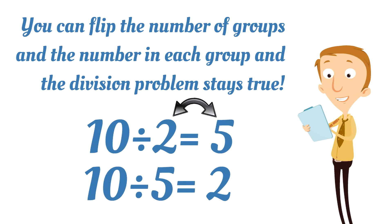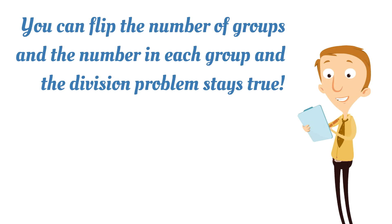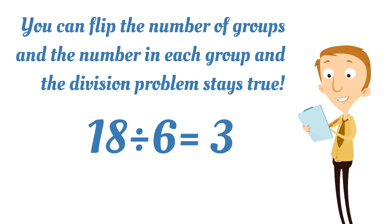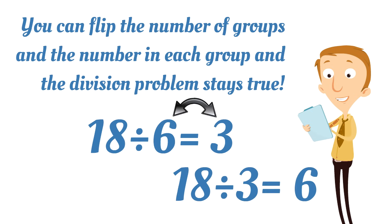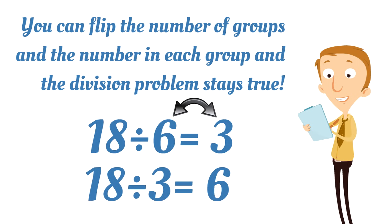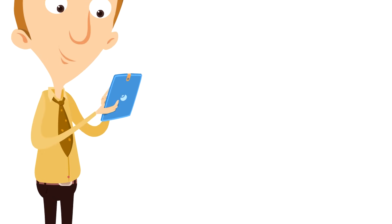10 divided by 2 equals 5, and 10 divided by 5 equals 2 — you can flip the number of groups and the number in each group and it still stays true. Or look at this: 18 divided by 6 equals 3. We can switch the 6 and the 3, and it stays true — so 18 divided by 3 equals 6. The 6 and the 3 can be flipped. Pretty nifty! Those were some cool facts.